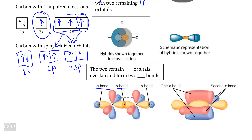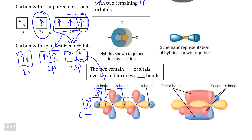Sigma bonds still form in exactly the same way. This sigma bond is formed by one of the sp hybrid orbital electrons pairing with hydrogen's 1s electron, giving us a hydrogen-to-carbon bond. The second sp hybridized electron pairs with the sp hybridized electron on the other carbon atom, giving us a single carbon-to-carbon sigma bond.